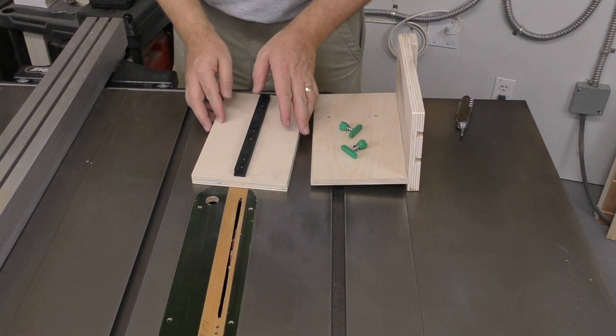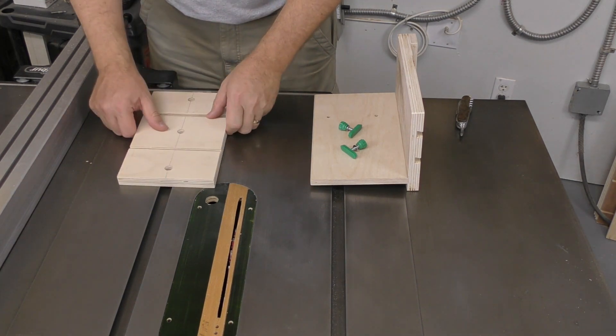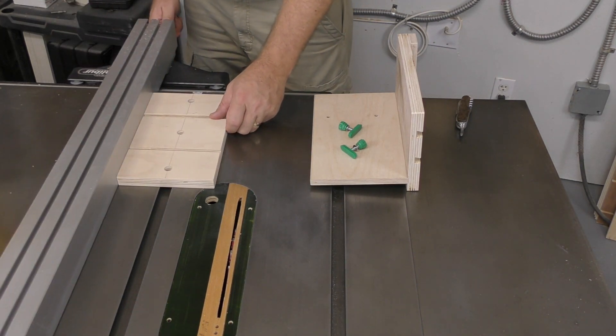The zero-play guide bar is mounted to the base, and then squared up using the rip fence.